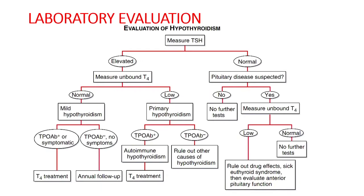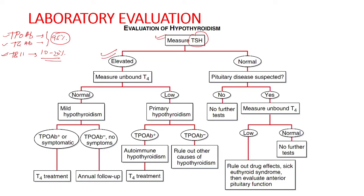In autoimmune hypothyroidism, thyroid peroxidase and thyroglobulin antibodies are present in 95% of cases, and TBII assays are positive in 10 to 20% of cases. For lab evaluation, TSH is measured first; if elevated, free or unbound T4 is measured. If T4 is low, it is primary hypothyroidism, and TPO antibodies are tested. If these are present, autoimmune hypothyroidism is confirmed and levothyroxine treatment is started.